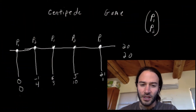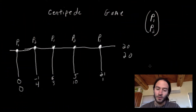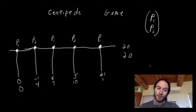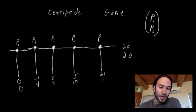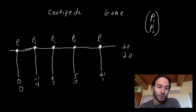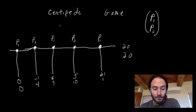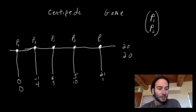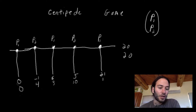What I drew here is something commonly called the centipede game — I guess because it looks like a centipede, though I always thought centipedes had legs on both sides. Anyway, that's what they call it. The game is between player one and player two, and they alternate making decisions to either stop or keep going. Player one gets the first choice to stop; if he stops, both players get nothing.